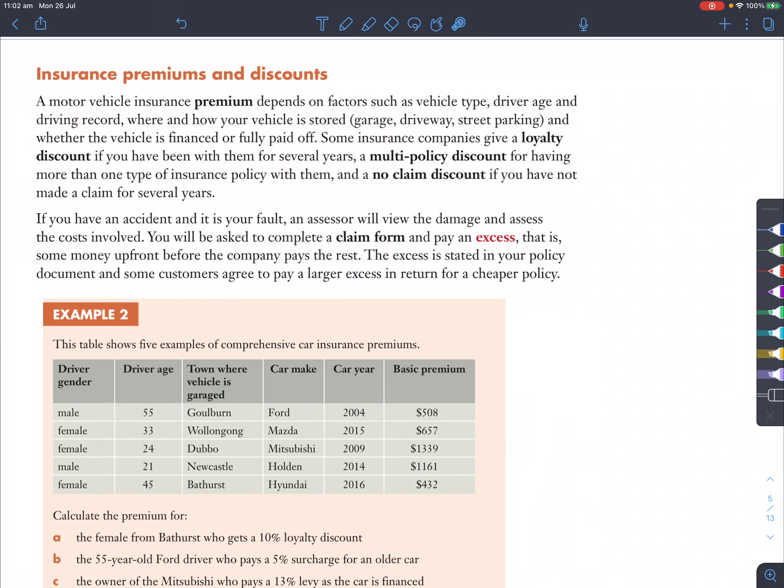Moving on. Now, a lot more theory here. Insurance premiums and discounts. A motor vehicle insurance premium depends on the factors such as vehicle type, driver age, and driver record, where and how your vehicle is stored, so say for example a garage, driveway, and street parking, and whether the vehicle is financed or fully paid off. Now, all of these things here will cause your premium to go higher or lower.